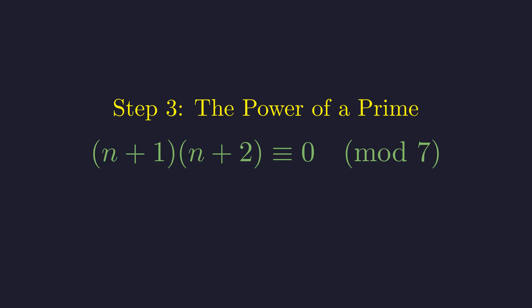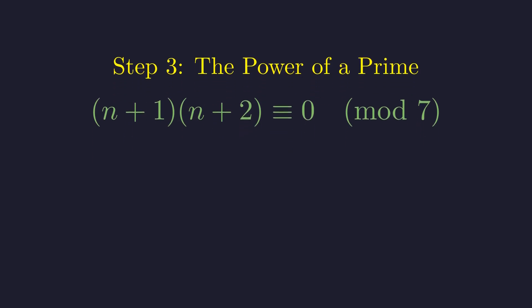Now we arrive at the logical core of the solution, which relies on a special property of prime numbers. We have a product of two integers whose result is divisible by 7. The critical fact here is that 7 is a prime number. This means it cannot be split into smaller integer factors.